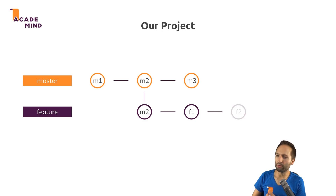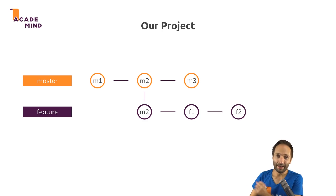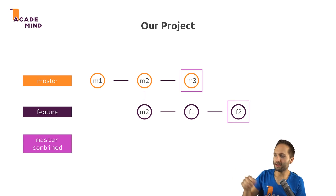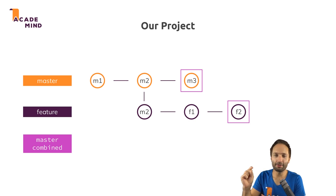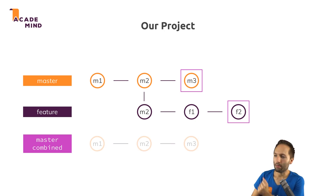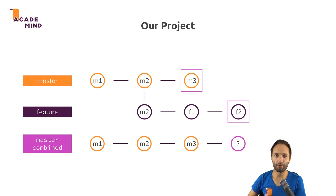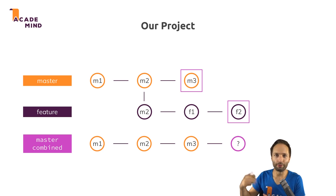After that, we want to continue with our feature branch and finish our feature. The question is how can we combine these developments — the m3 commit, the latest commit in our master, and the latest commit in our feature branch — back into our master branch. For that we have a lot of different approaches, and in this video I want to show you two ways: one way with git merge, the other way with git rebase.